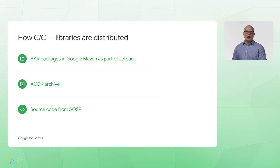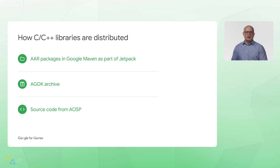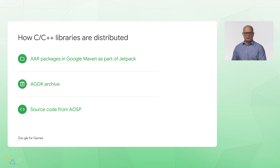How are our libraries distributed? You can get them as AAR packages from Jetpack. You can get both static and dynamic binaries of the libraries from the AGDK-SDK files. And for advanced integration, you can get the source code from the Android Open Source Project.